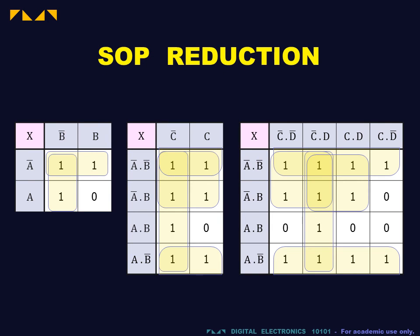The Karnaugh map is therefore a powerful tool for logic simplification in situations involving two, three, or four input variables.